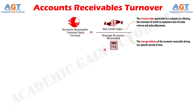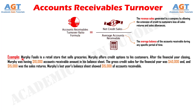Now let's look into a mathematical example of the accounts receivables turnover ratio formula. Murphy Foods is a retail store that sells groceries and offers credit options to its customers. After the financial year closing, Murphy had $10,000 in accounts receivable on his balance sheet. The gross credit sales for the financial year were $40,000, and $15,000 was the sales returns. Murphy's last year's balance sheet showed $15,000 of accounts receivable.